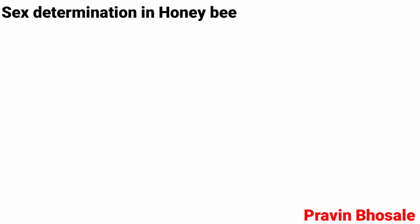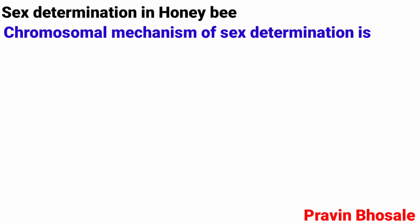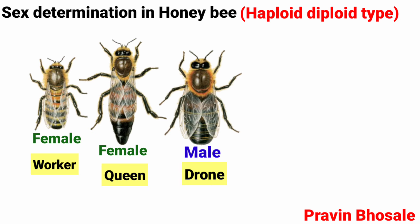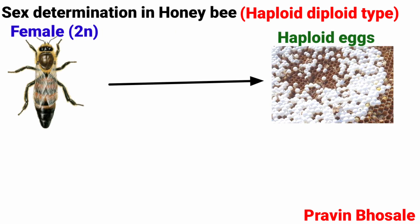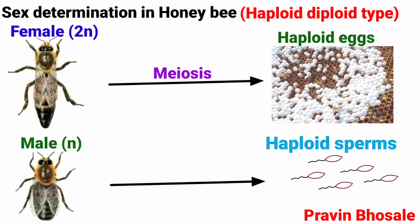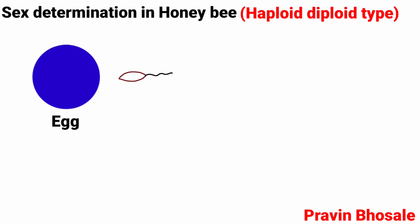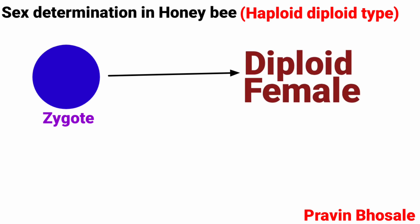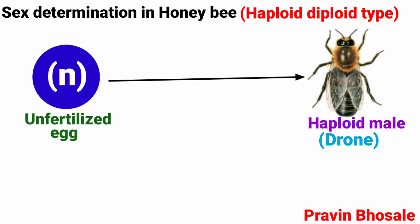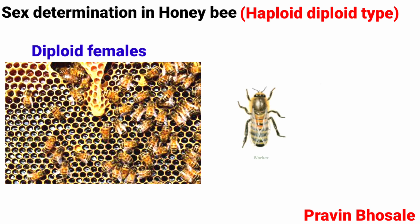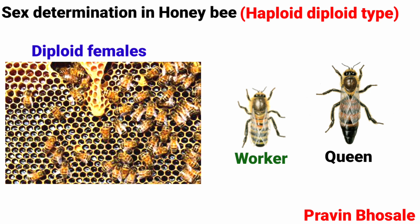Sex determination in honeybee: The chromosomal mechanism of sex determination is haploid-diploid type. Here, the sex of the individual is determined by the number of sets of chromosomes received. Females are diploid and males are haploid. The female produces haploid eggs by meiosis, and the male produces haploid sperm by mitosis. If the egg is fertilized by sperm, the zygote develops into a diploid female. An unfertilized egg develops into a haploid male, called a drone, by way of parthenogenesis.